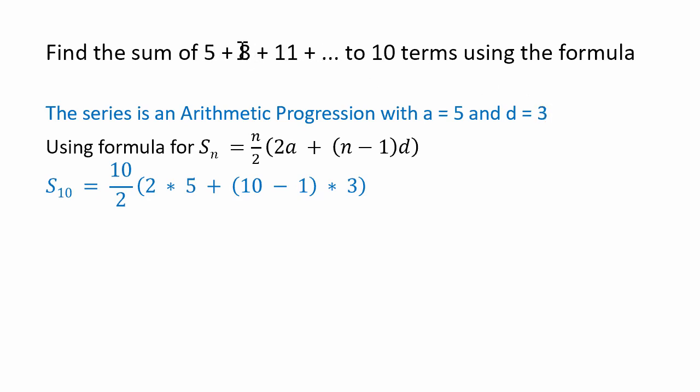In this arithmetic progression, a is 5 and d is 3. Next, the sum of n terms formula: S_n equals n by 2 times (2a plus (n minus 1) times d). You should remember this formula.